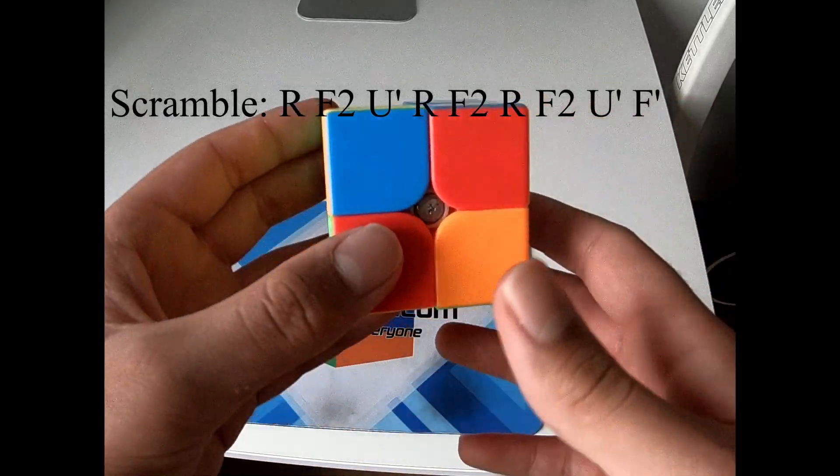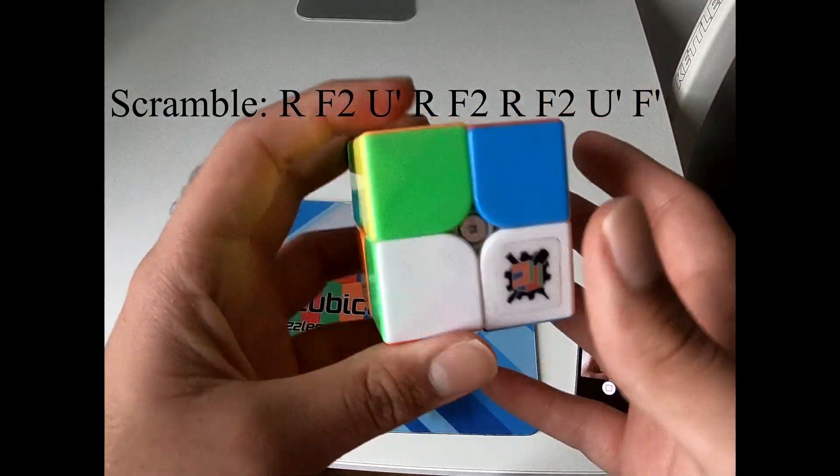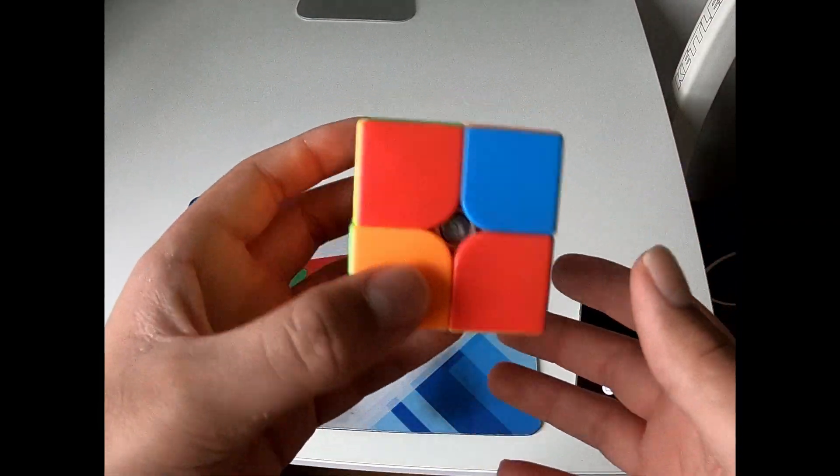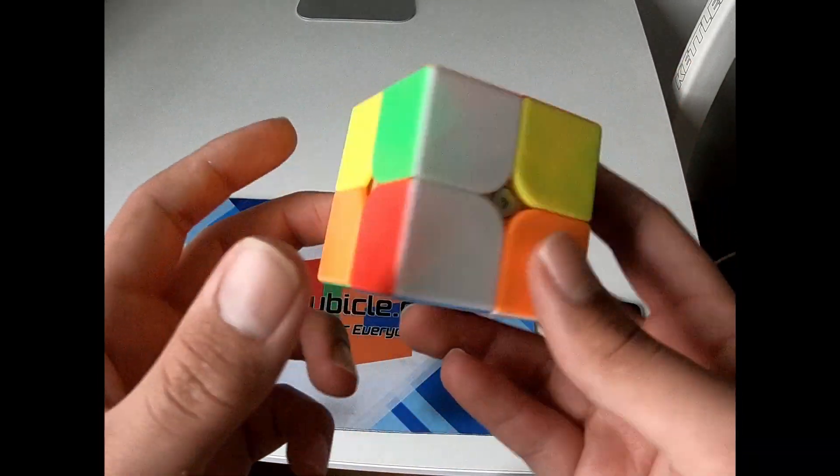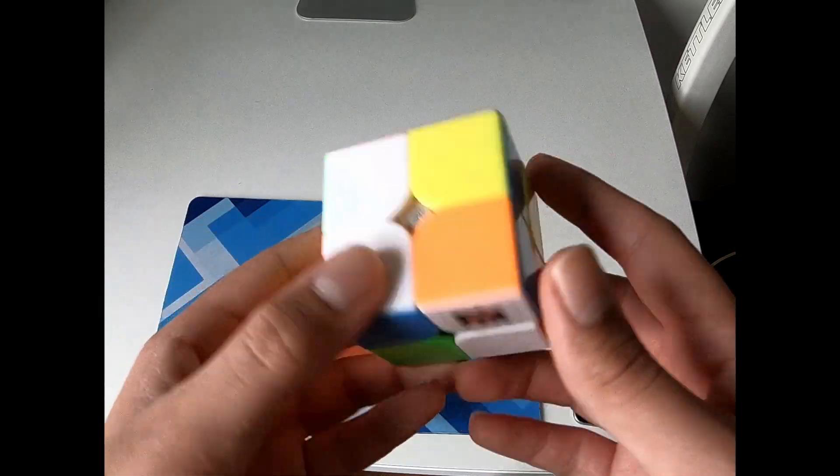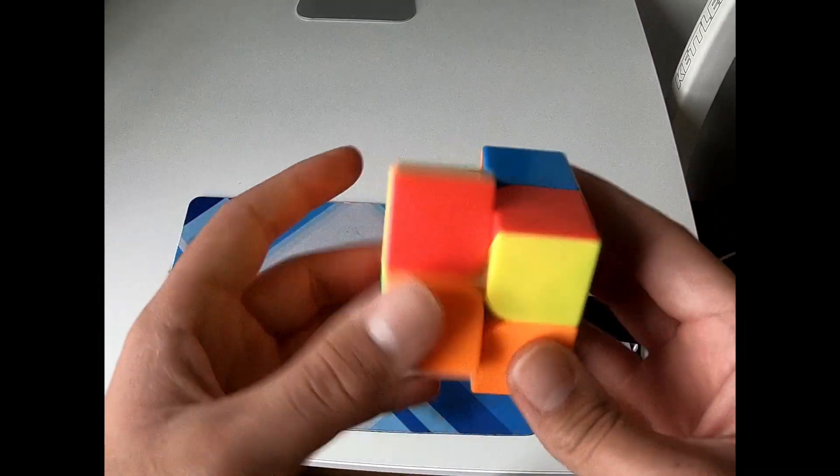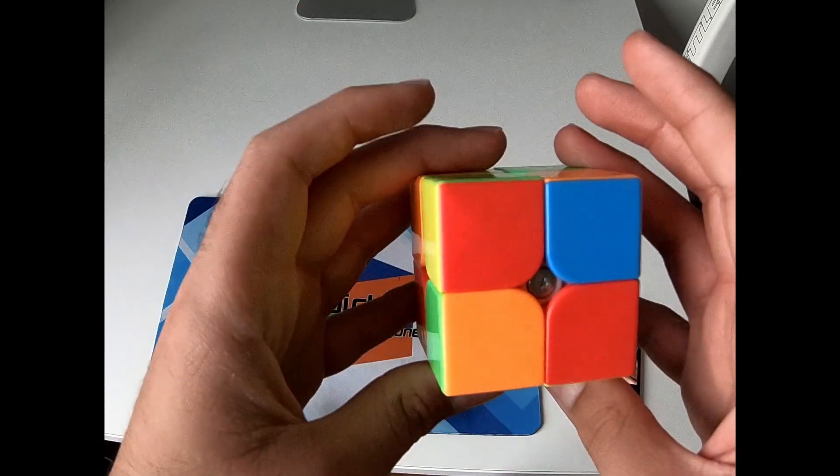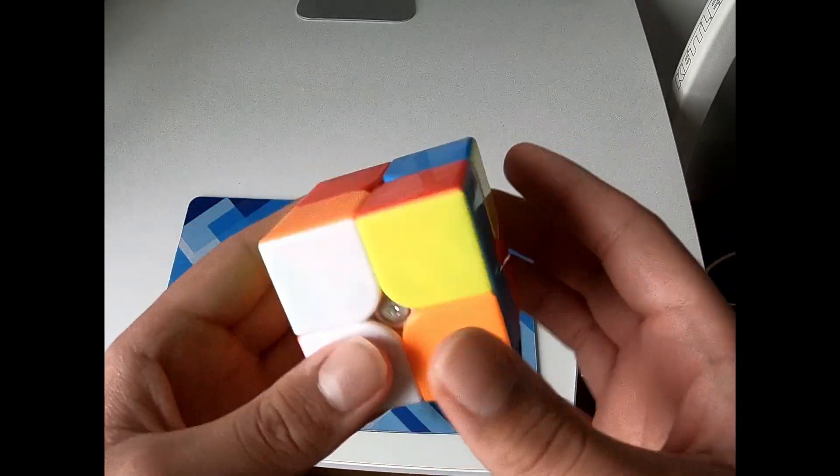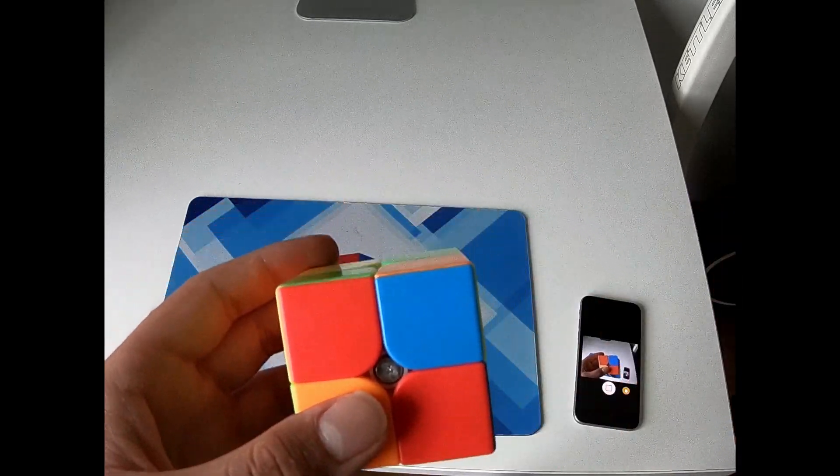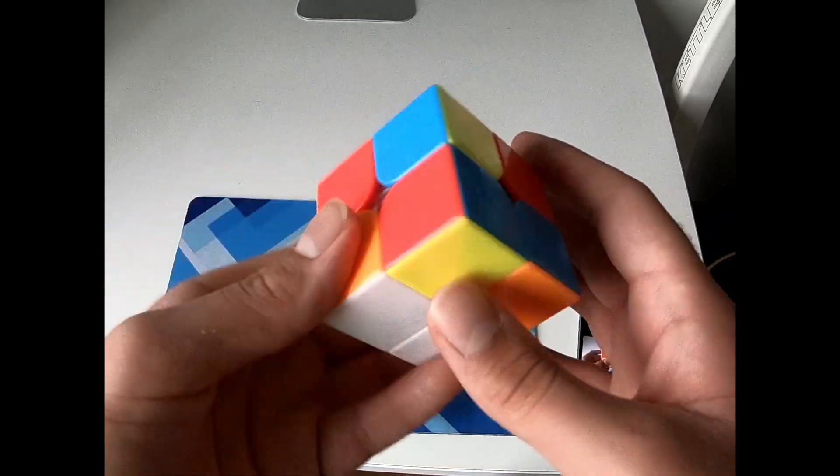Alright, for this third scramble here, I got a 1.04. So obviously, right off the bat, you see this one-move white EG1 face. But that gives me my least favorite anti-soon case. It's horrible. I mean, it's probably decent. I just can't really finger-execute it too well.